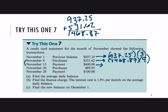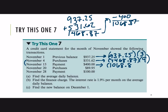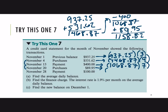Then on the 13th, a $400 payment is made, so we subtract $400, and the new balance is $1,068.87. That balance is carried from the 13th through the 19th — seven days. Then it changes again on the 20th: a purchase of $89.95 is added, giving a new balance of $1,158.82, which is carried from the 20th through the 27th — eight days.